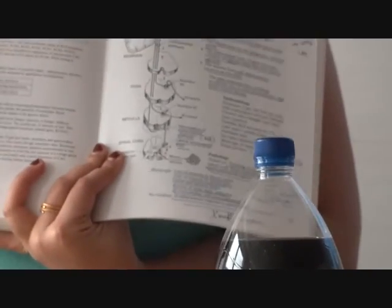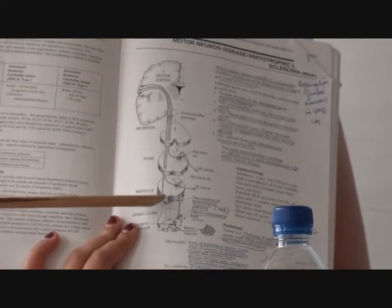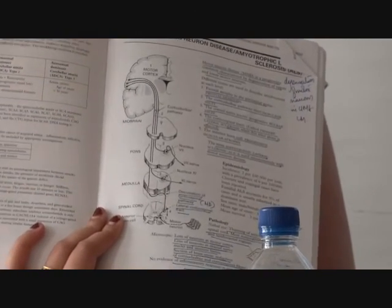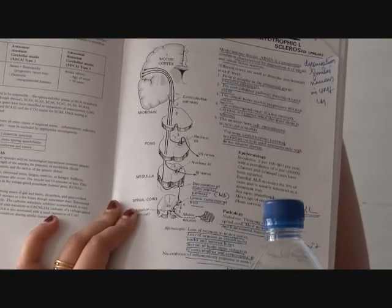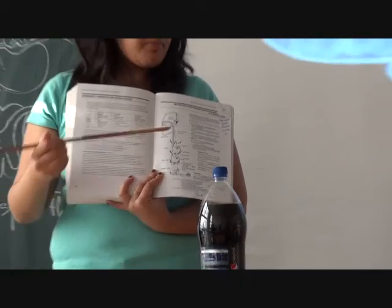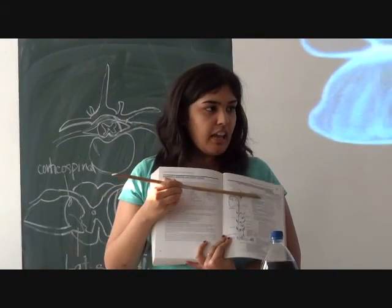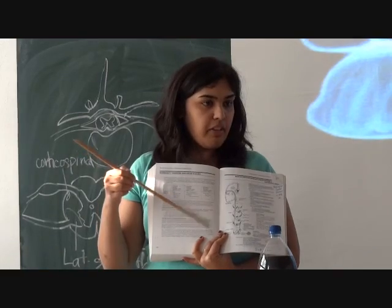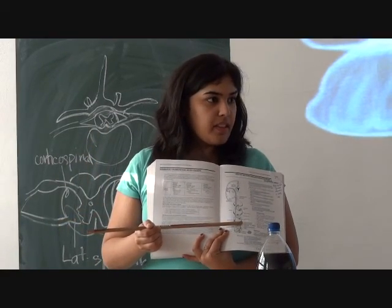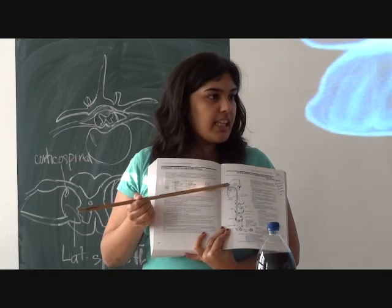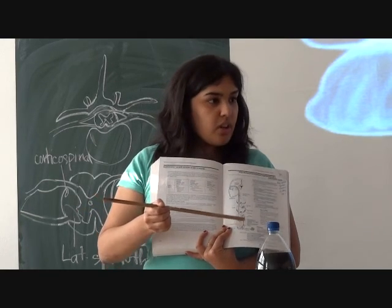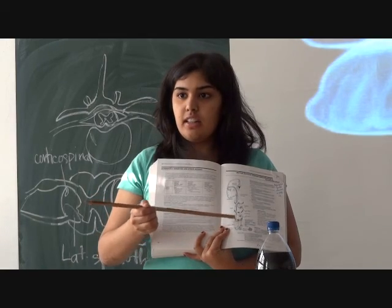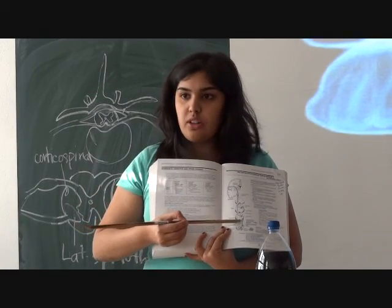Now think: if there is damage to the cortex, because there is a crossing over, if your right motor cortex gets damaged, your left muscles will be affected. If it's the left, your right will be affected — because there is a crossing over. They are only showing from the right side here, but imagine the left side — there would be two crosses just below the medulla.